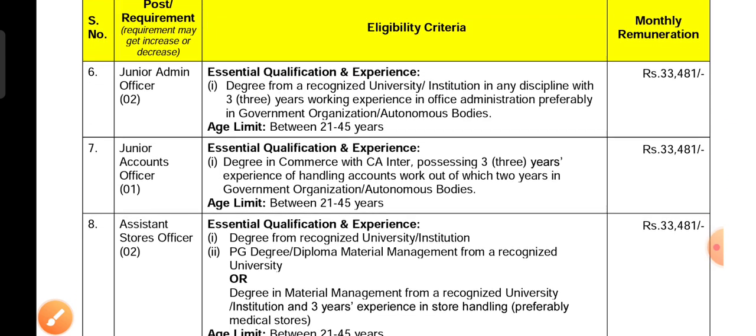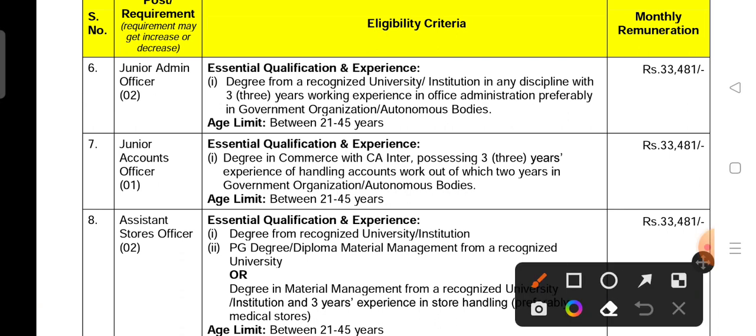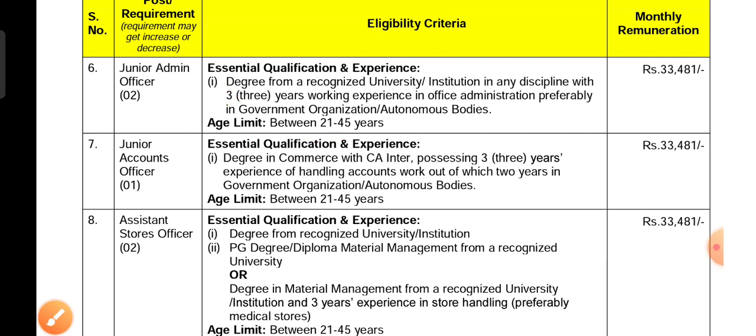The junior admin officer post requires a qualification of 30 degrees. The age limit is 21 to 45 years, and the monthly salary is 33,481. The junior account officer post requires a degree qualification in commerce, with 3 years of processing experience, and the salary is 33,481.